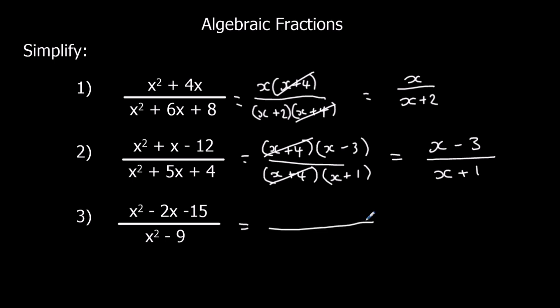And finally here. Double bracket the top. And you should recognize this is the difference of two squares. It's a double bracket as well on the bottom. So the top, it's going to be 5 and 3. So x plus 3, x minus 5. Cancel the x plus 3s, leaving x minus 5 over x minus 3.